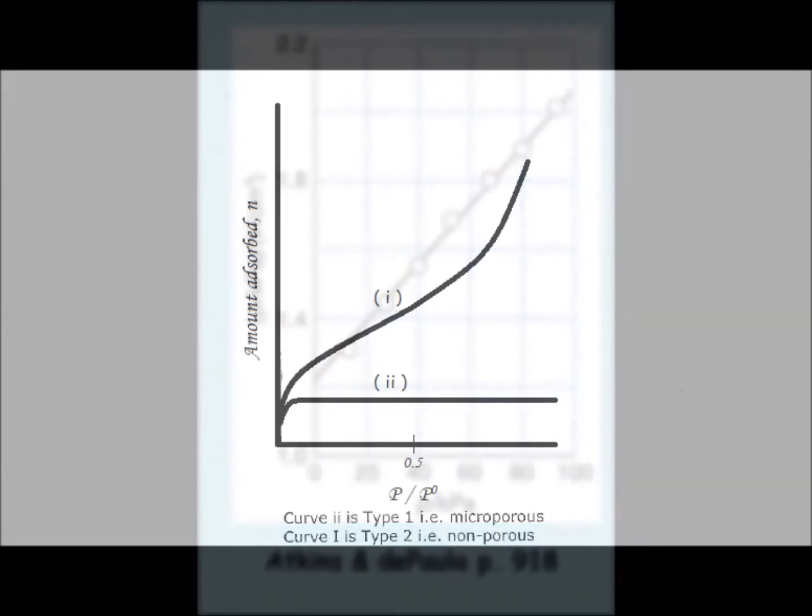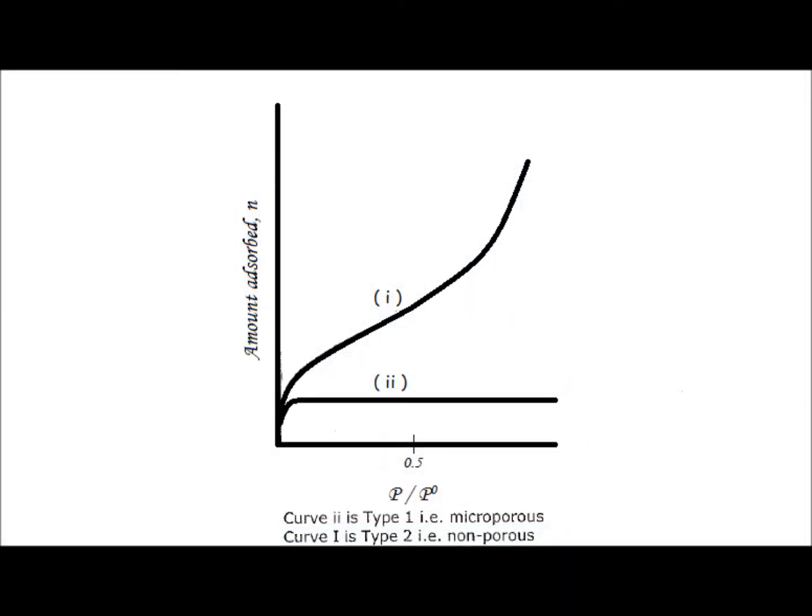For type 1, adsorption occurs during the monolayer on the curve. For type 2, the curve increases with physisorption followed by chemisorption.